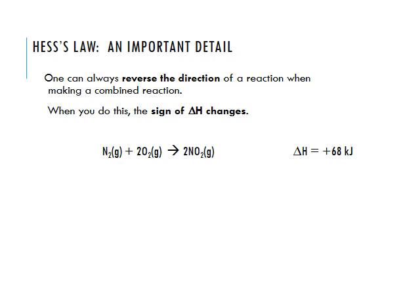One important strategy: we can reverse the direction of a reaction when making a combined reaction. If we take nitrogen plus 2 oxygen making nitrogen dioxide and flip it so that the products become reactants and reactants become products, all that does is change the sign of our delta H value. So instead of positive 68 kilojoules, we get negative 68 kilojoules.